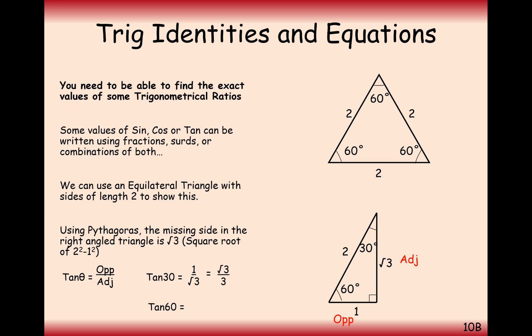And for tan of 60, it is opposite over adjacent. So we swap around the opposite and the adjacent now. So it's root 3 over 1, which is just root 3.